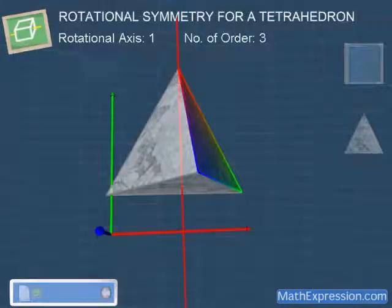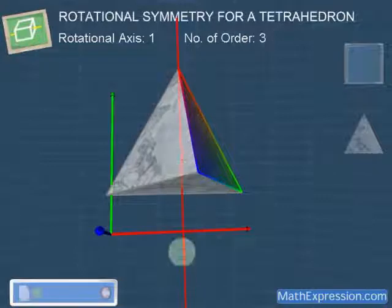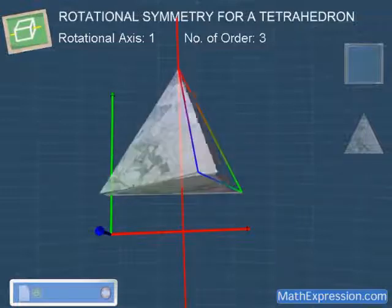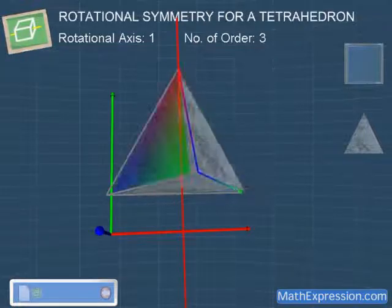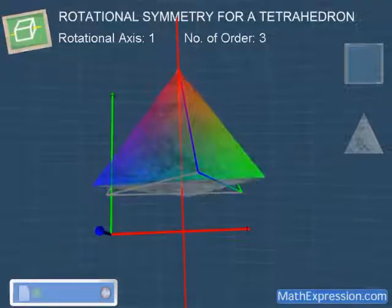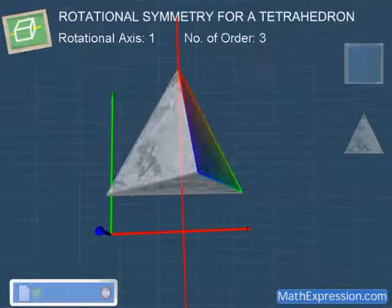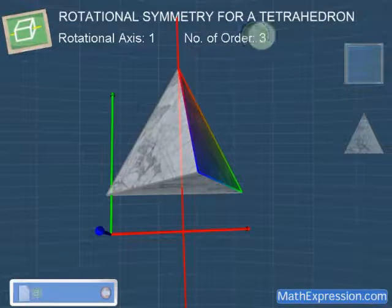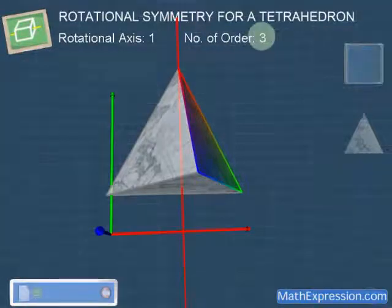When we rotate the tetrahedron about this axis for 360 degrees, we can see that the tetrahedron matches itself for 1, 2, 3 times. With this, we can say that this axis is the axis of rotational symmetry of order 3.